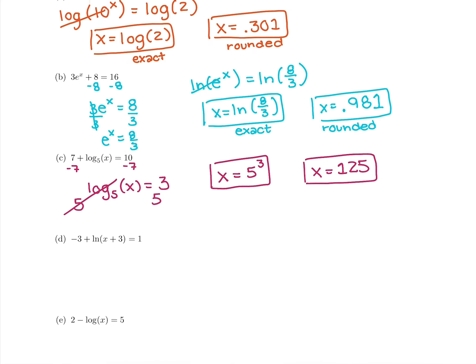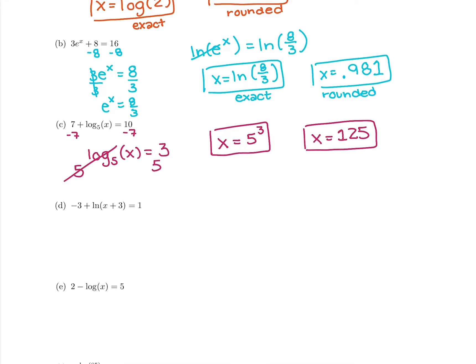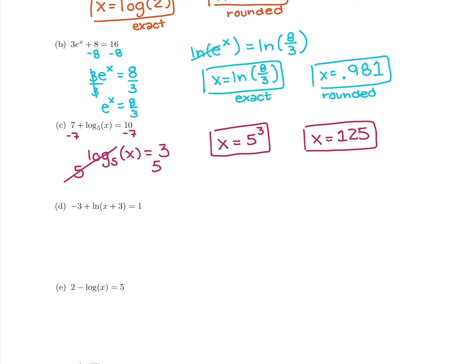Alright, we're going to keep going. We're going to isolate the log, then use an exponent to cancel out the log and get the answer by itself. So first, isolating the log, I'm going to get rid of that negative 3 by adding 3 to both sides. So I'm going to have ln of x plus 3 equals 1 plus 3 is 4.